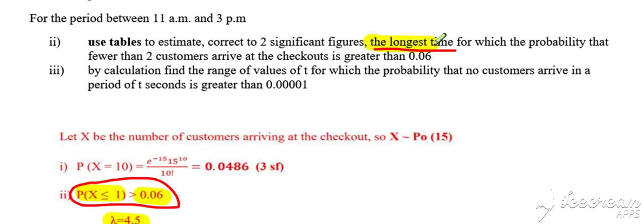So our longest time for which the probability of fewer than two customers arrive at the checkouts needs to be greater than 0.06 is equal to 1.5 minutes.